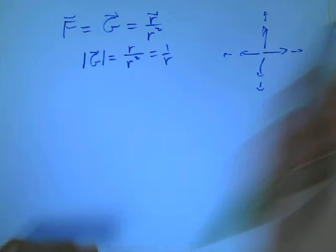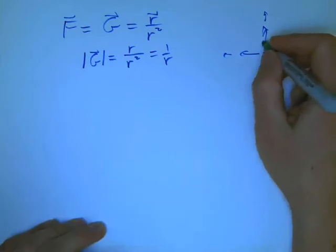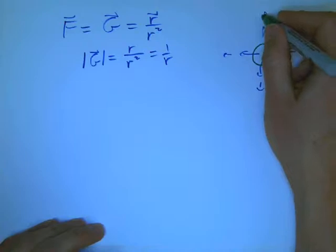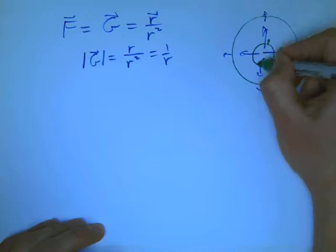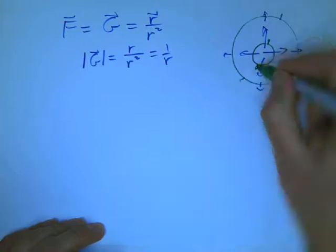And so what that does is it has a prayer of having the same flux. It has a really good chance of having the same flux out through this circle as it does through this circle.